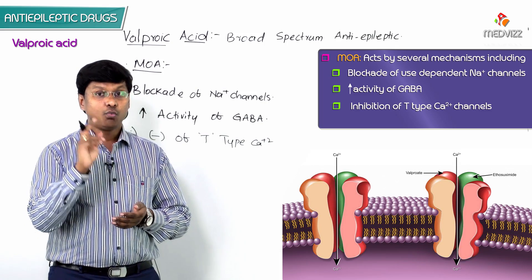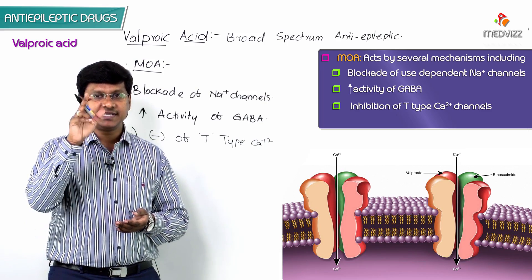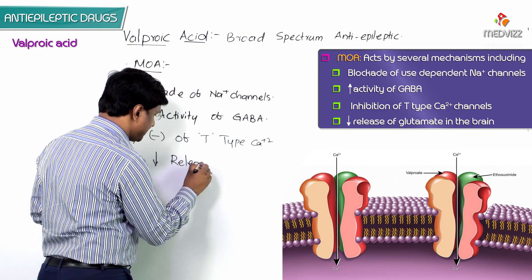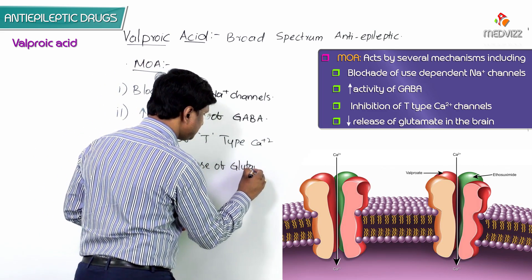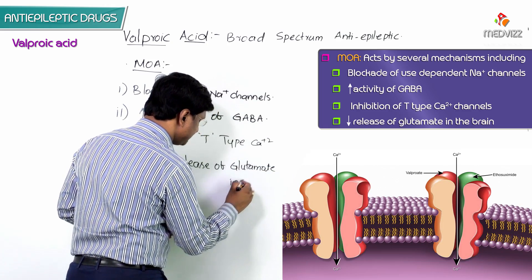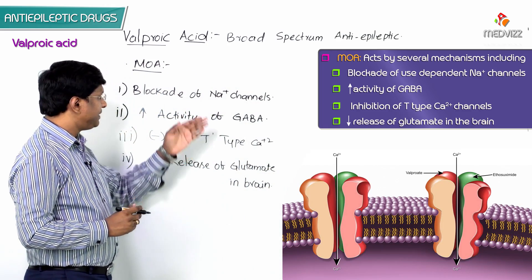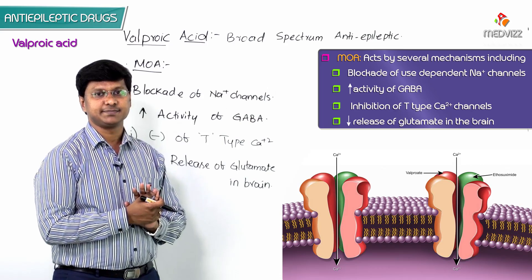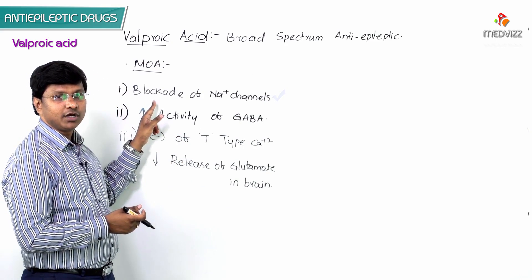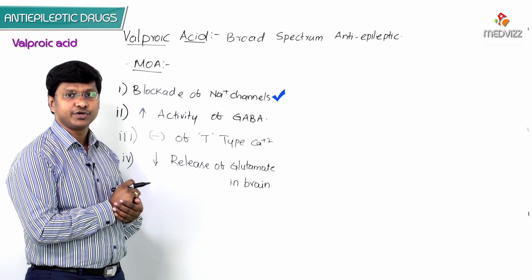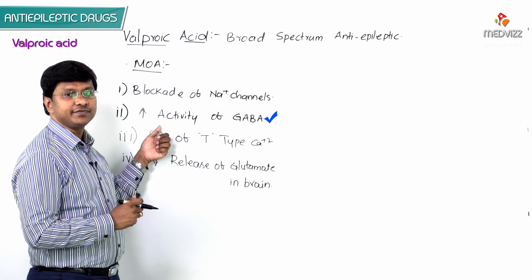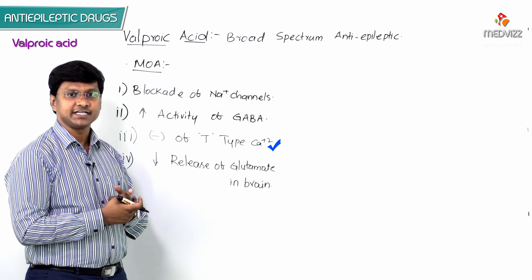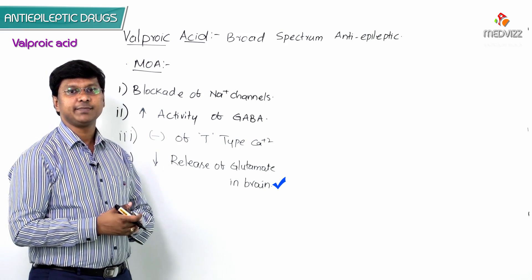The fourth mechanism: we have an excitatory neurotransmitter called glutamate, and valproic acid will decrease the release of glutamate in the brain. So, in summary, due to these multiple mechanisms — sodium channel blockade, increased GABA activity, inhibition of T-type calcium channels, and decreased glutamate release — valproic acid is used as a broad-spectrum anti-epileptic drug.